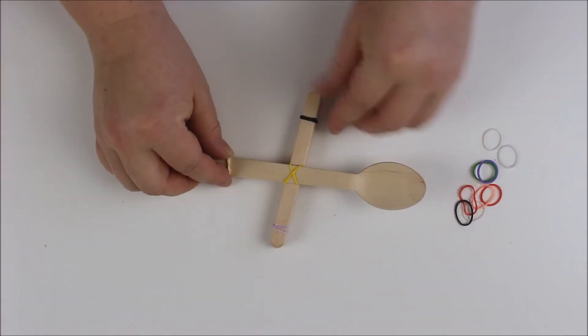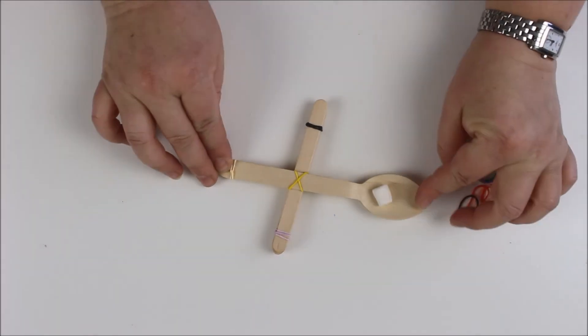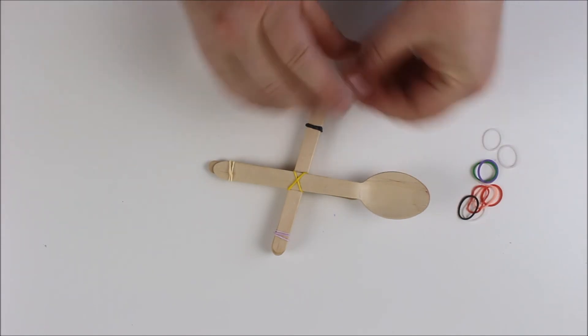So there we've got our catapult and it's dead simple. We can use it to flick marshmallows. Just make sure you hold tight.